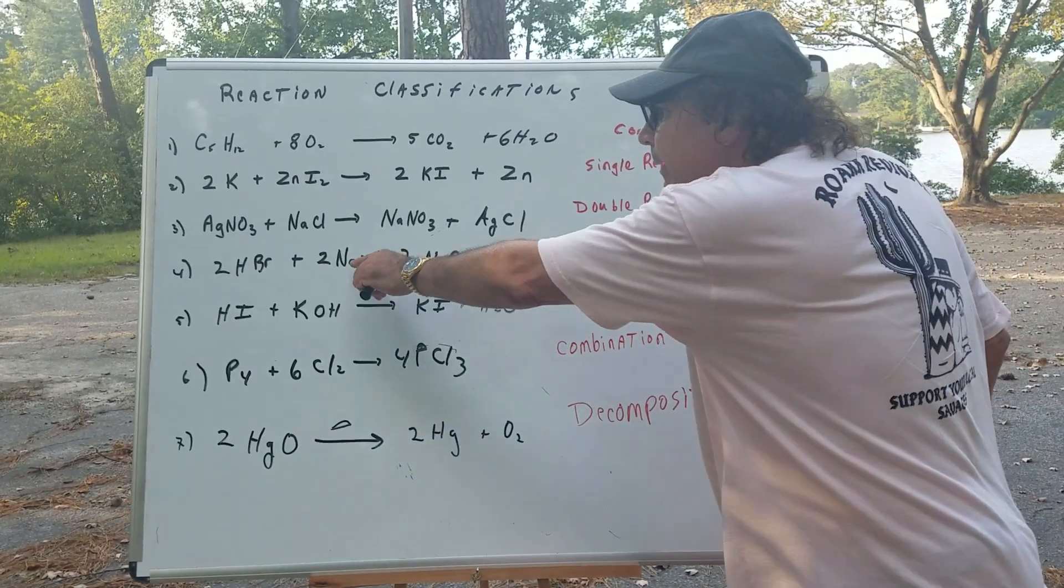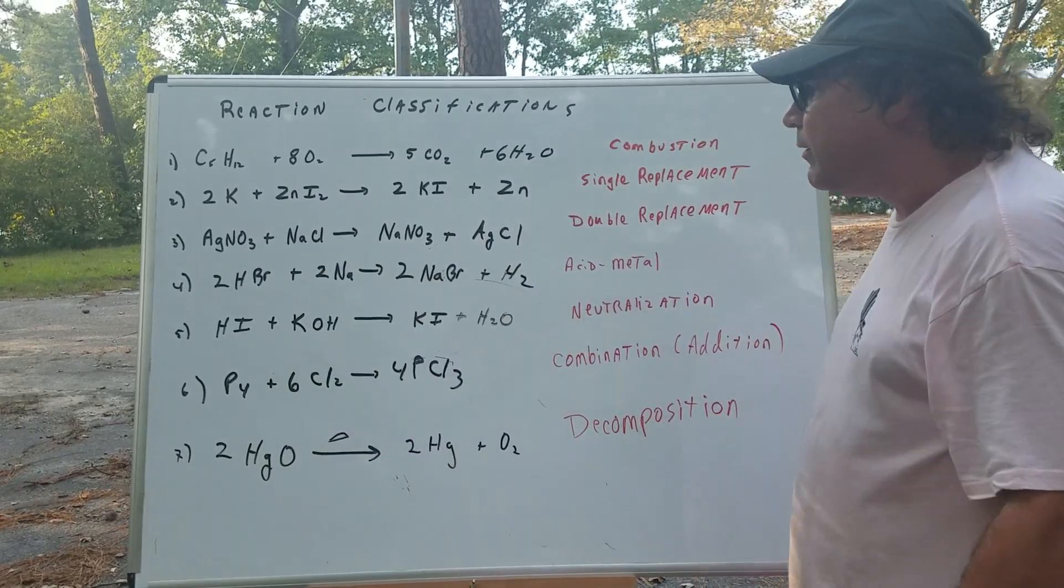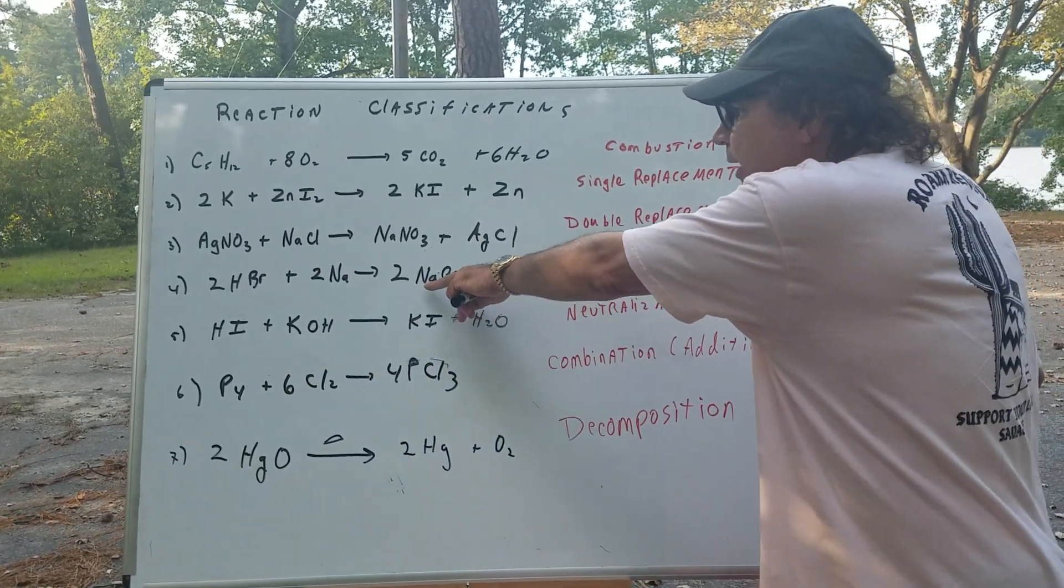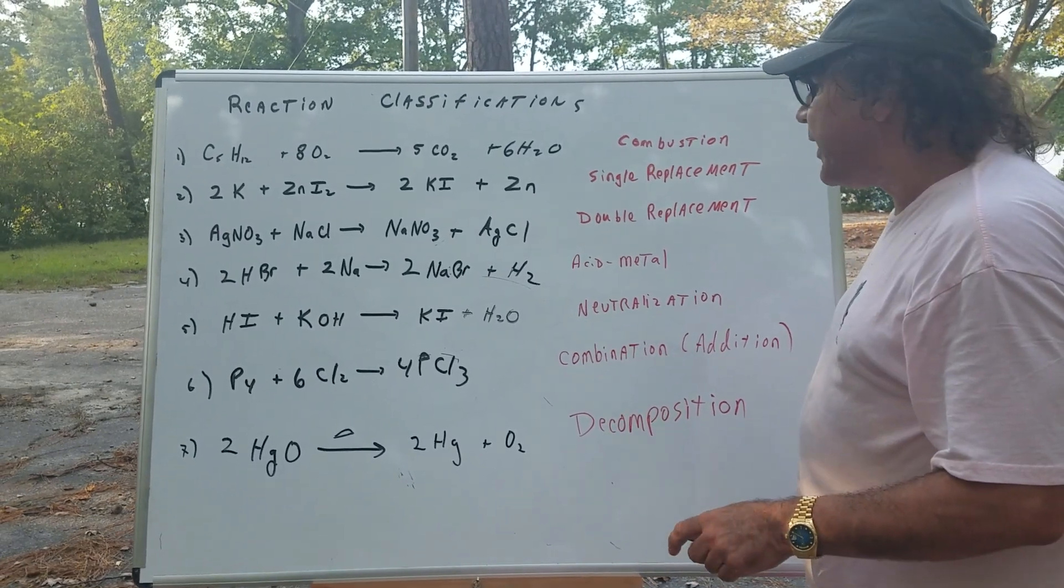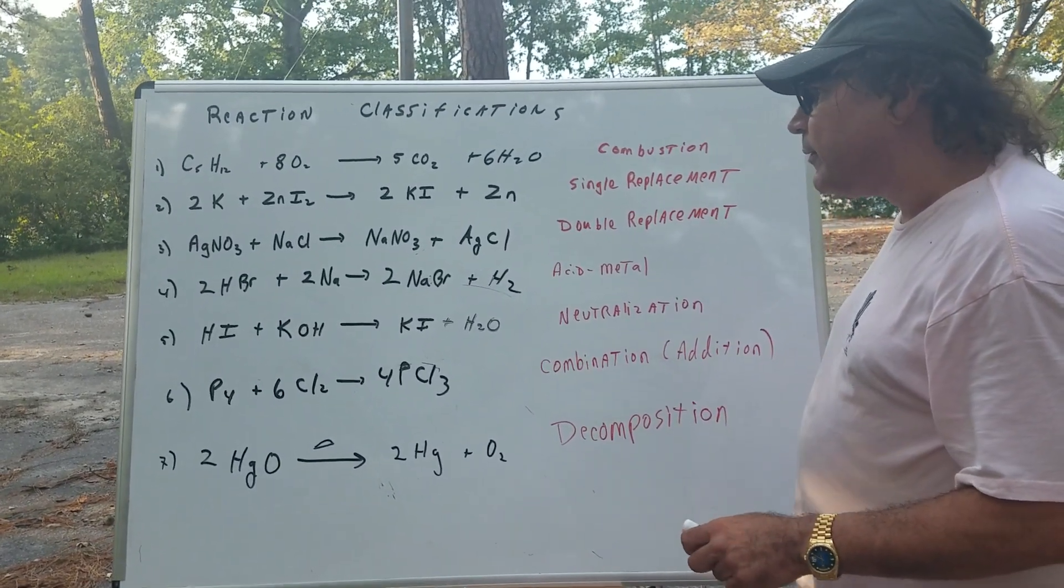Here's a metal reacting with an acid. Notice, you're going to get a salt and hydrogen gas. This is simply an acid-metal reaction. That's an easy one.